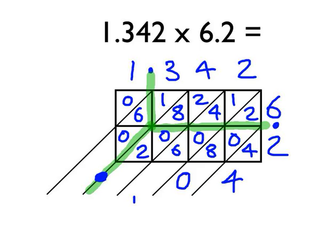Then we've got 1, add 4, is 5. Add 6 is 11. Add the 1 that we carried makes 12. So we put the 2 there and carry the 1. 2 add 8 is 10. Add the 2 is 12. Add the 1 we carried is 13. So we put the 3 there and carry the 1 to the next column.